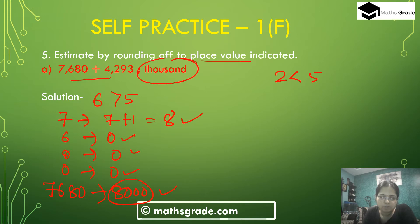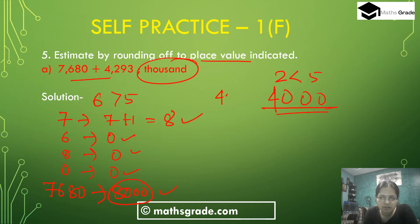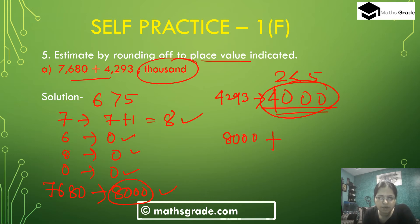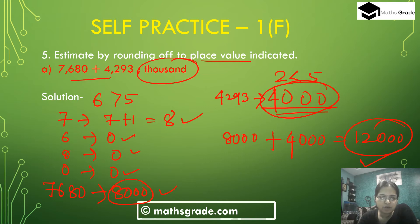The tens place digit 9 changes to 0 and the units place digit 3 changes to 0. So 4,293 rounded to the nearest thousand is 4,000. Now add: 8,000 plus 4,000 equals 12,000. So estimating the sum of 7,680 plus 4,293 to the nearest thousand gives us 12,000.